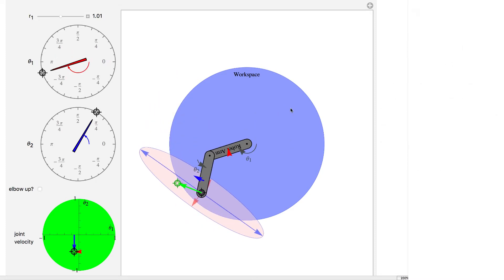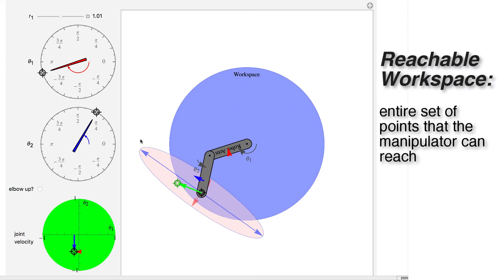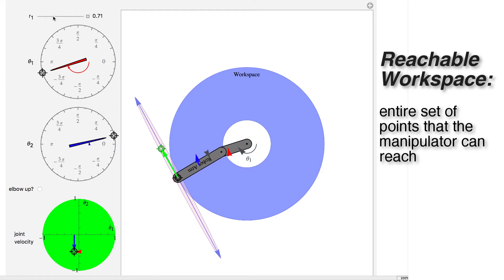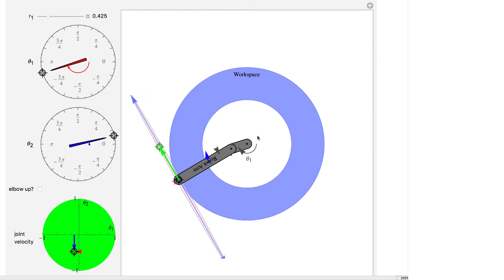I've shown a few extra things that are kind of interesting here. This blue space is the reachable workspace of the robot. As it moves around it can never leave this disk. Interesting things happen if you don't make these robot links the same length. If I make the first length a little bit shorter, see it's much shorter than the other, now this whole spot in the center is unreachable.